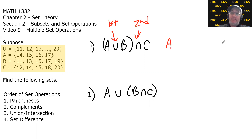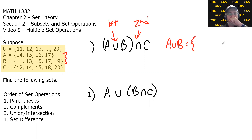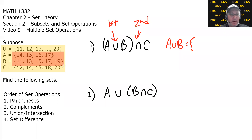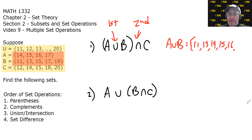Let's start with A∪B. Union just means join the two sets together. If we form the union of A and B, we get from least to greatest: 11, 13, 14, 15, 16, 17, and 19.